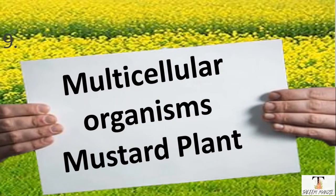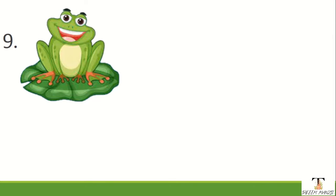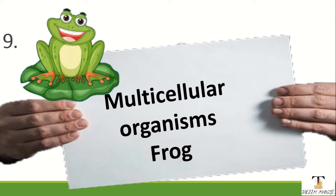There are two types of cellular organization: unicellular and multicellular. An example of unicellular is a mustard plant cell, and an example of multicellular is a frog. So this was the chapter overview.